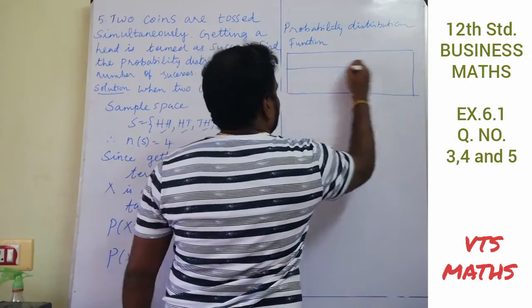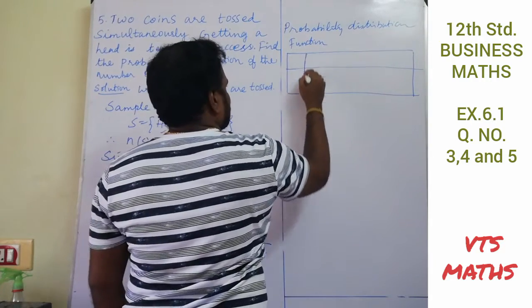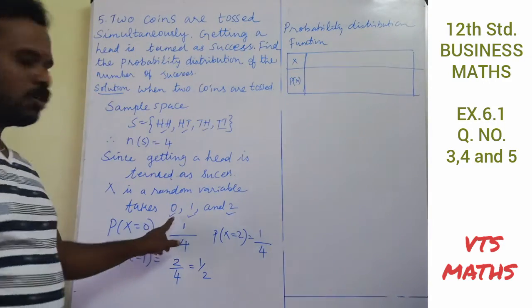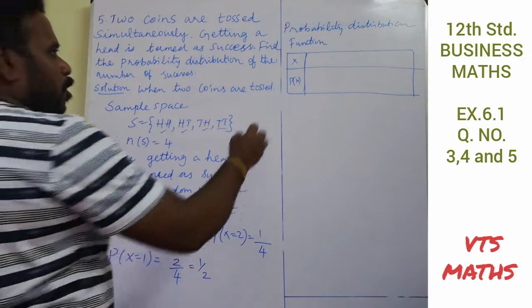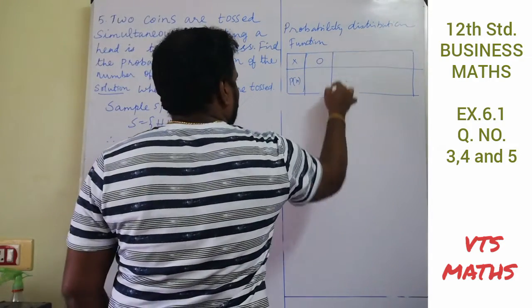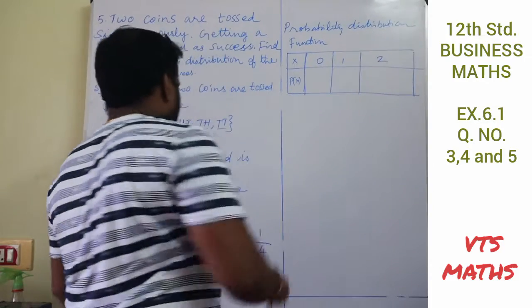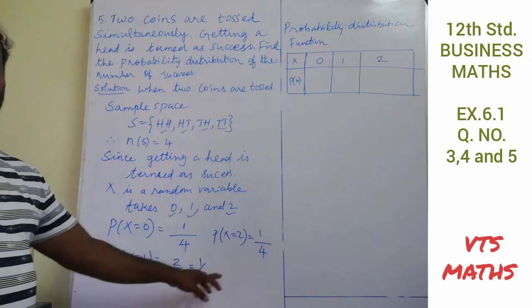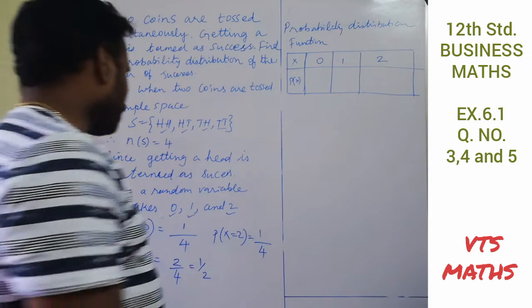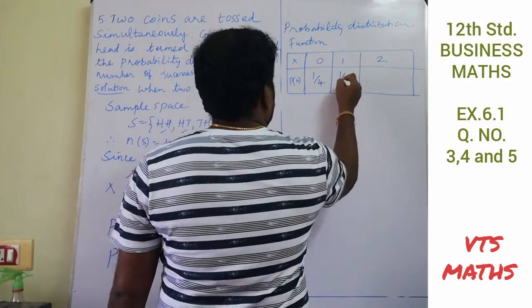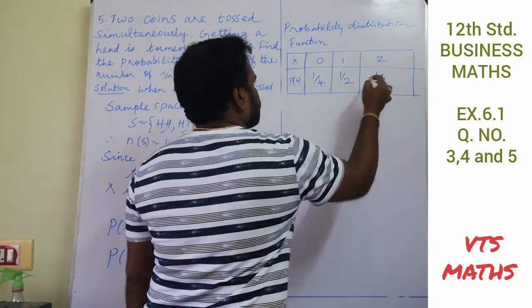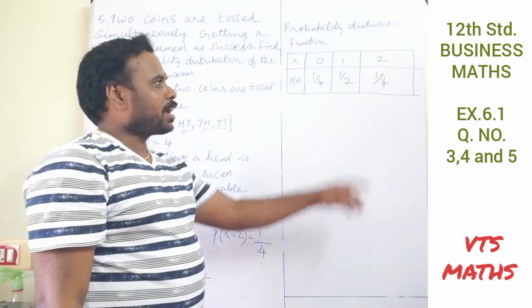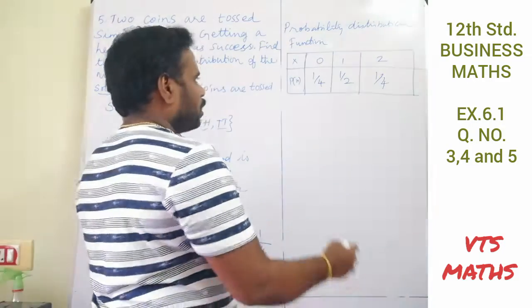The probability distribution table has x values 0, 1, 2 with corresponding probability values 1/4, 1/2, and 1/4 respectively.